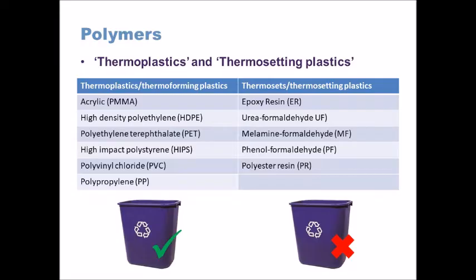Thermoplastics have a plastic memory. What this means is if you heat a thermoplastic up, such as acrylic, it will become soft, pliable, malleable, and ductile, allowing you to form it. You'll have probably used thermoplastics in school — acrylic on a strip heater or line bender, or high impact polystyrene for vacuum forming.